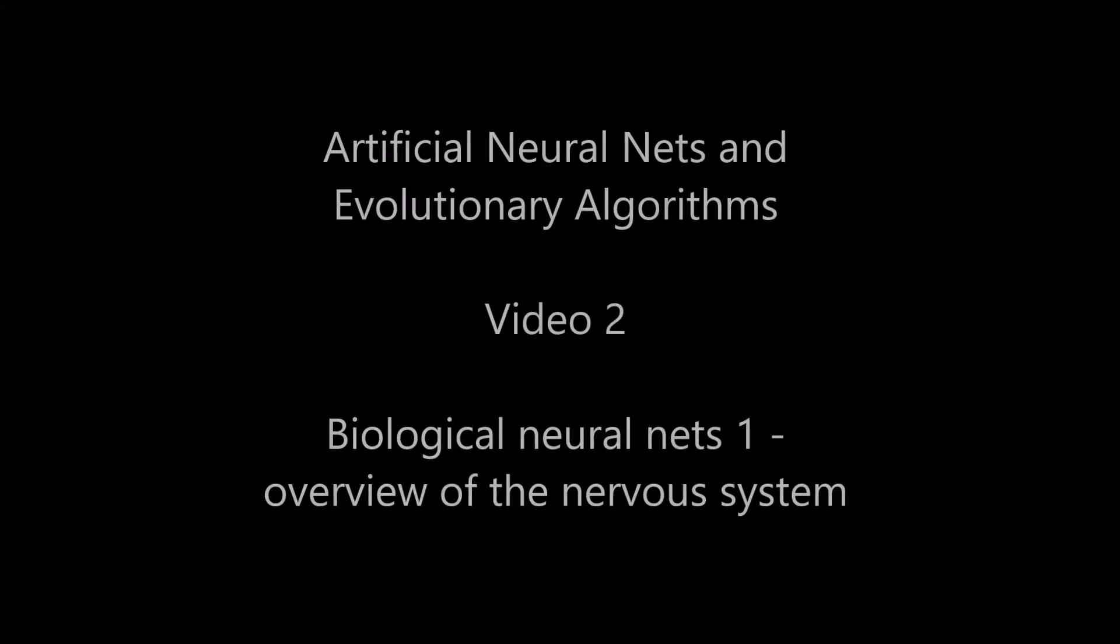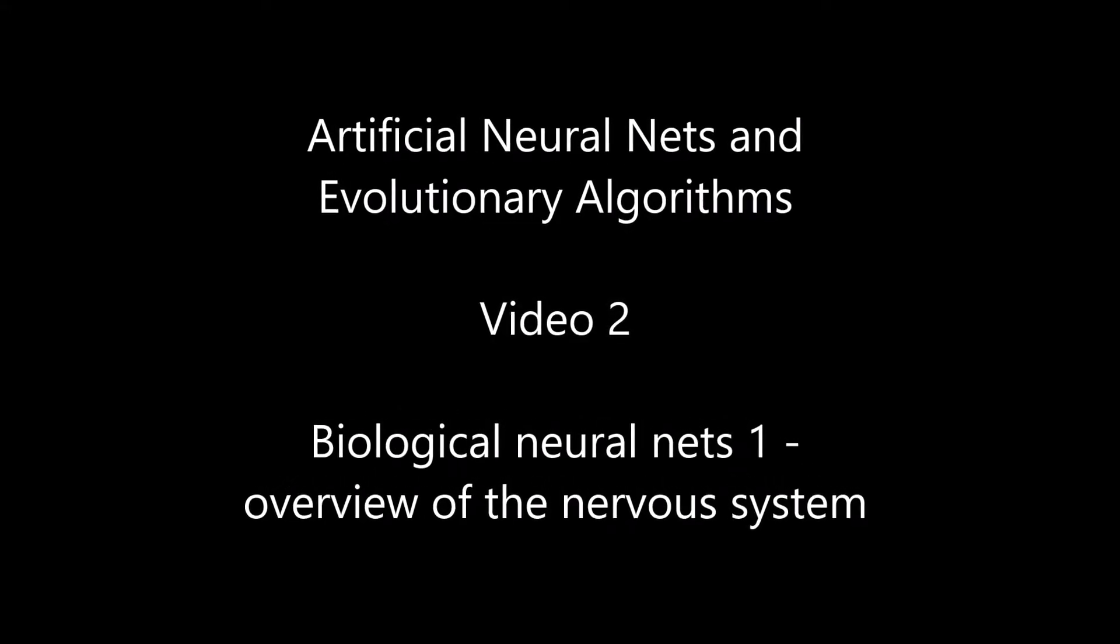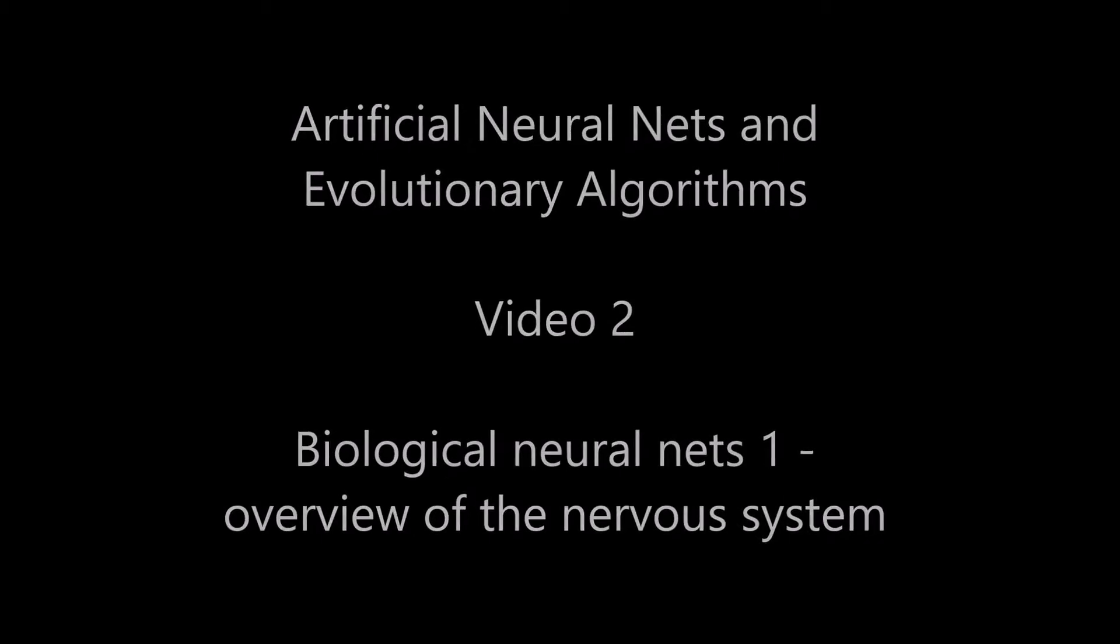Before we get into details on how neurons themselves work, it's important to understand the structure of the wider nervous system, as this tells us a lot about how the neurons are connected together and how they make the whole system operate. The nervous system can be divided into two great divisions.